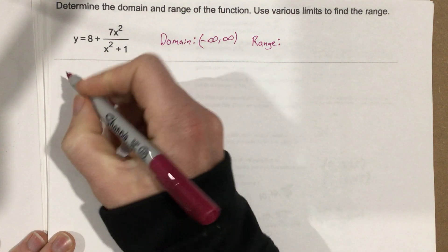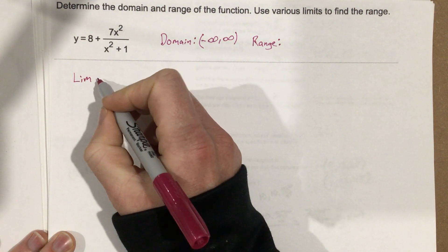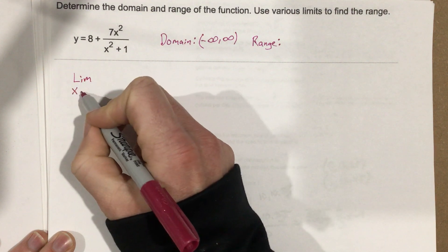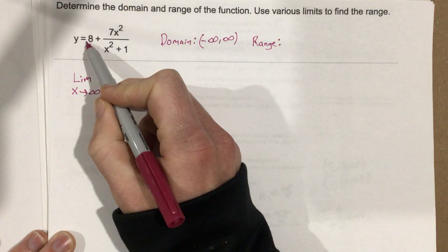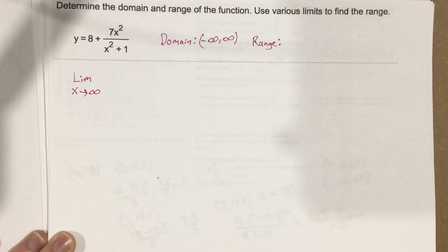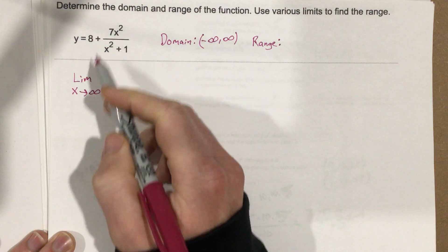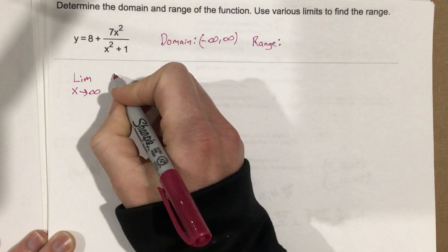Let's do the limit as x approaches infinity. The other thing to keep in mind is this 8 is going to be just constant for this function. We're going to take something and add 8 to it. So I'm only going to look at this rational piece of the function when I do the limit, because I want to know what is this rational piece equaling as we approach infinity.